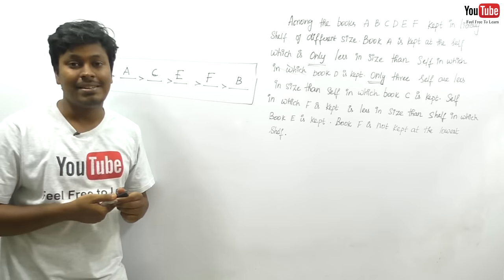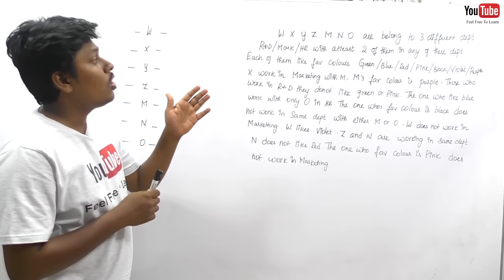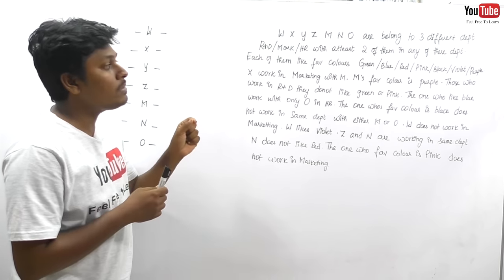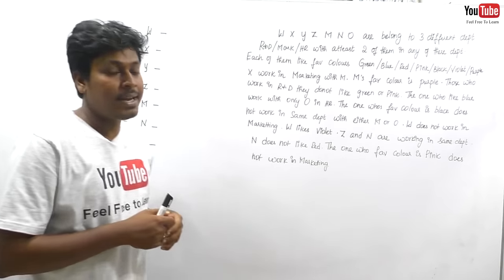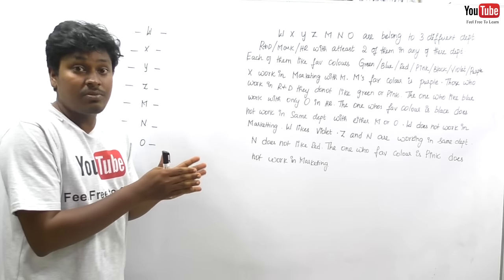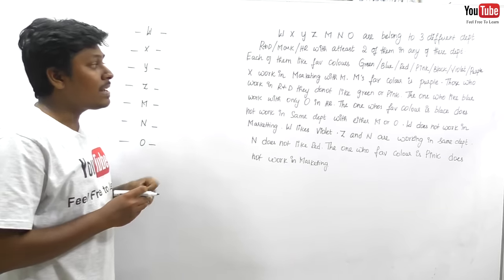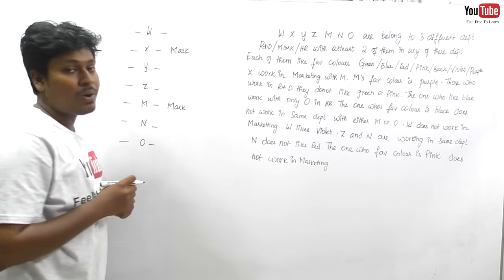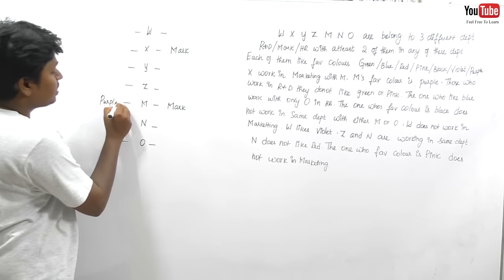Let me move on to the third arrangement. W, X, Y, Z, M and N — seven persons belonging to three different departments: R&D, Marketing, and HR — with at least two persons in any department. Each person has a different favorite color: green, blue, red, pink, black, violet, purple. X works in marketing with M, so M also works in marketing. M's favorite color is purple.